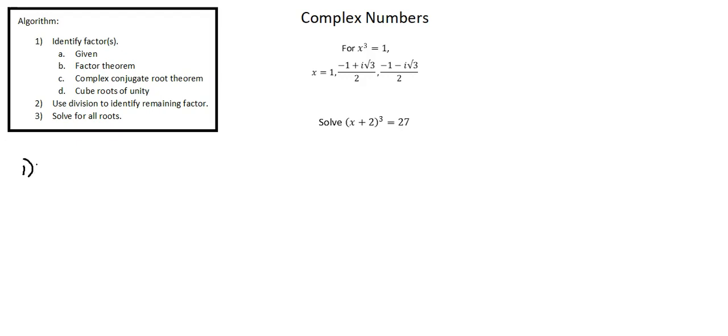Going to our algorithm, step 1, identify factors. In this case, we're going to use the factors from the cube roots of unity, so I'll simply note unity. The clue that we're going to use the cube roots of unity is that we're dealing with an equation that's a cubic with no quadratic term and no linear term, simply x to the power of 3 and a constant.